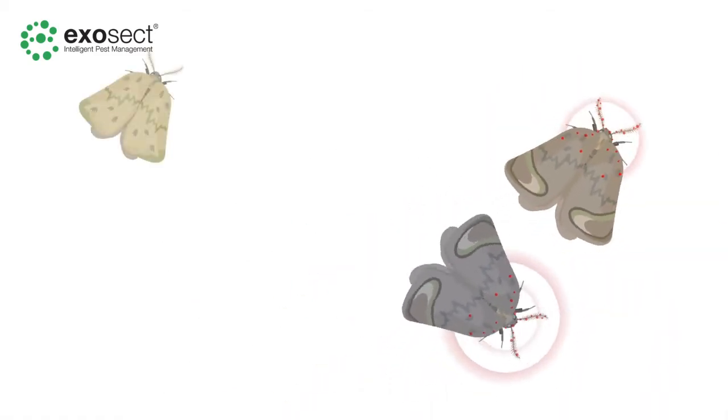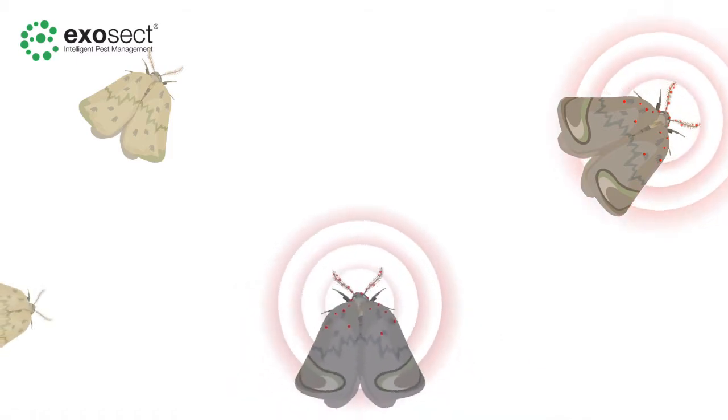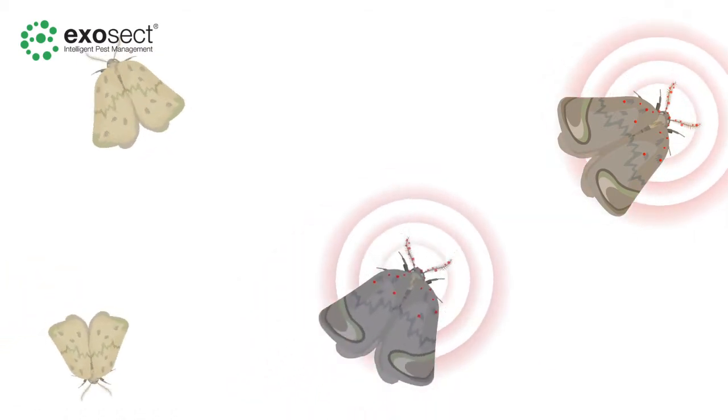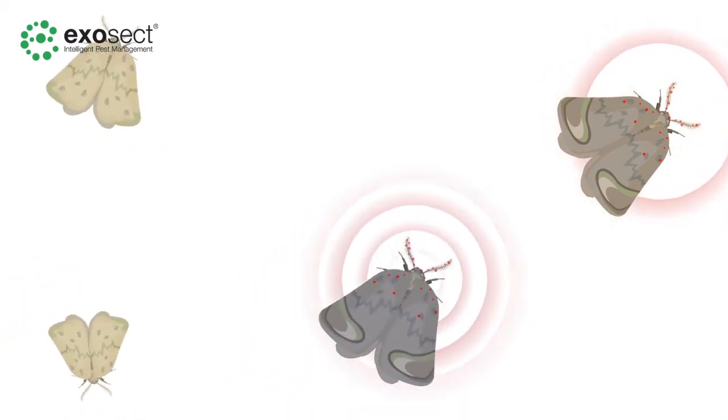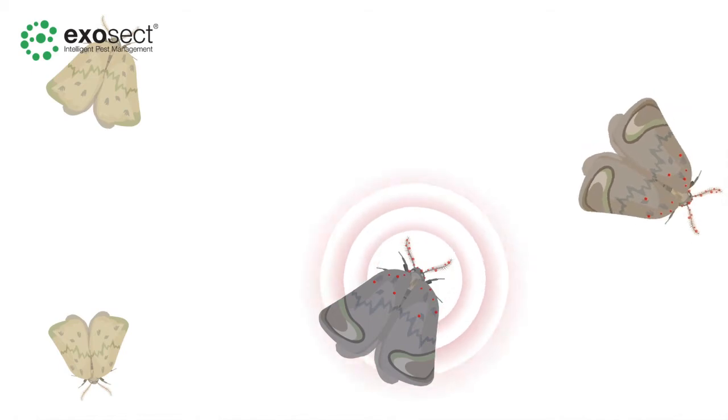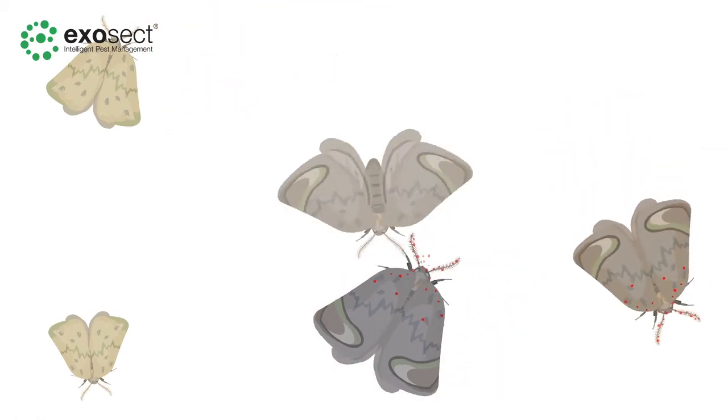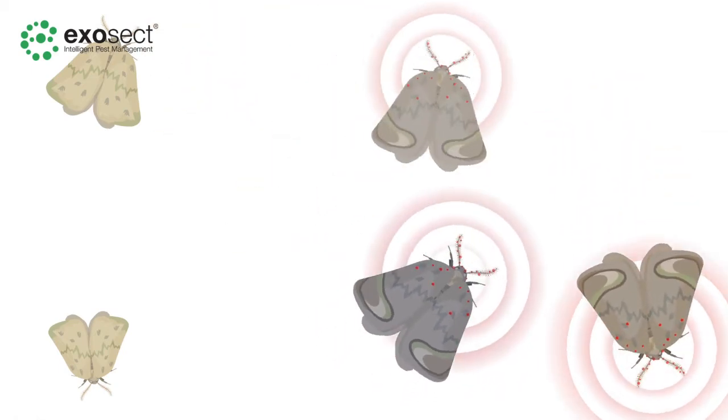This process is called auto-confusion. The result is a state of sexual confusion amongst the male moth population, leading to effective mating disruption. The auto-confusion effect dramatically reduces the chances of the female moth to mate.